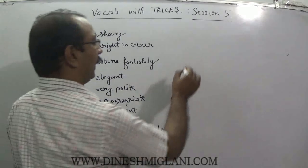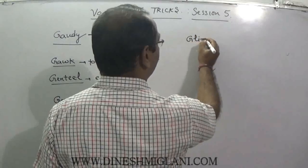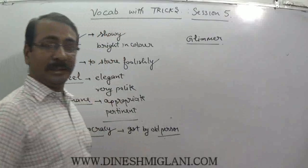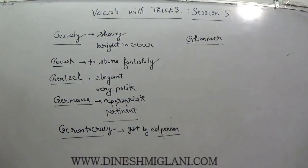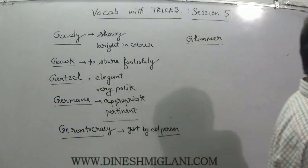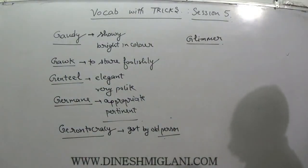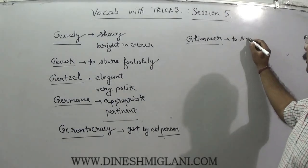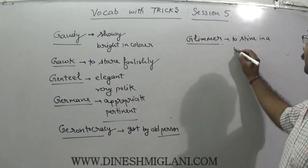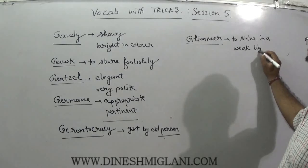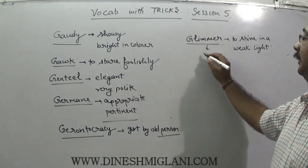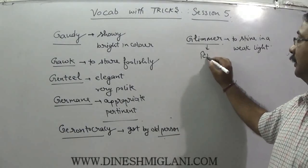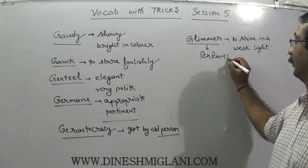Next word is glimmer, G-L-I-M-M-E-R. Glimmer is close to glamour — glamour means something very shiny and attractive. Glimmer means to twinkle, to shine with a weak light. Like a firefly (jugnu) that glows in the dark, or stars that twinkle — tim-tim aana. That is said to be glimmer: to shine in a weak light, or tim-timana.